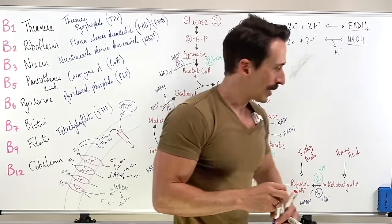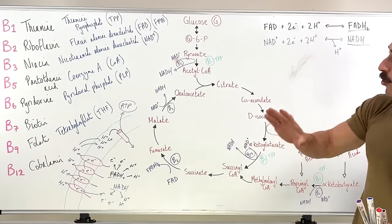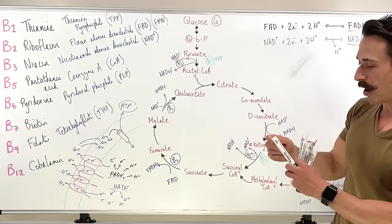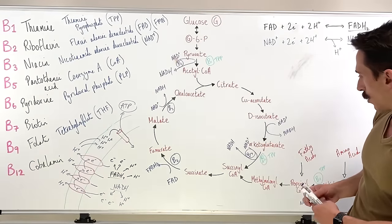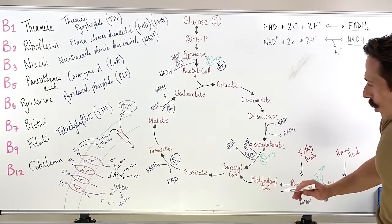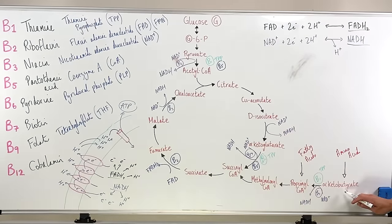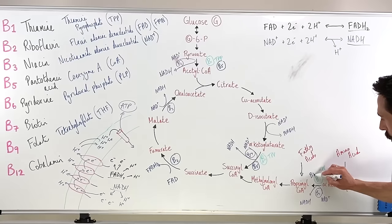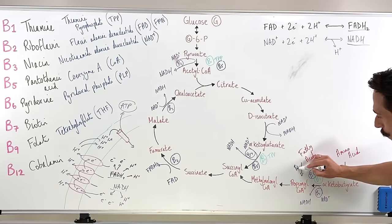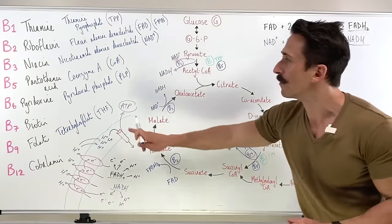The next point is pantothenic acid, B5, which works in the form of coenzyme A. Any time you see a molecule turn into something that has coenzyme A or CoA attached to it, that's because of pantothenic acid in the form of CoA. So B5 is working at pyruvate to acetyl-CoA, alpha-ketoglutarate to succinyl-CoA, alpha-ketobutyrate to propionyl-CoA, and also for converting fatty acids into propionyl-CoA. Essentially, any place where something turns into a CoA-containing molecule, pantothenic acid is involved.